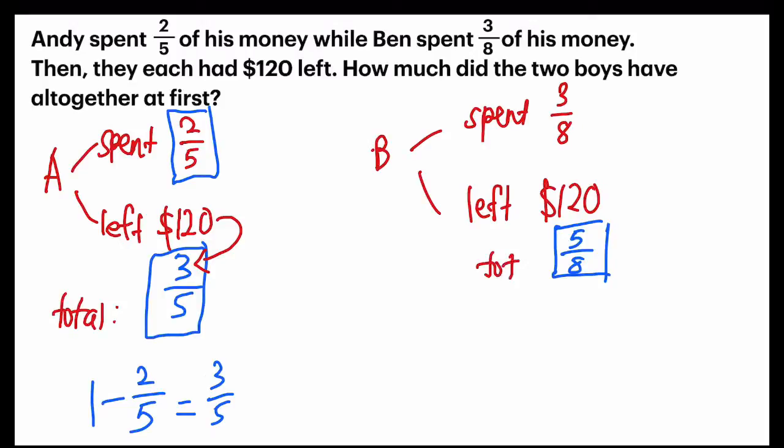Same goes to Ben. We are going to find, for Ben, 8 units, and $120 is equal to 5 units.